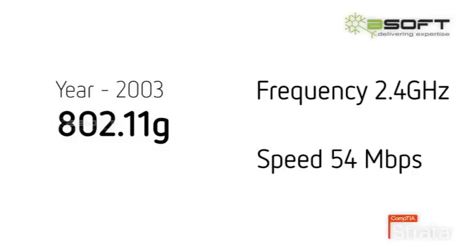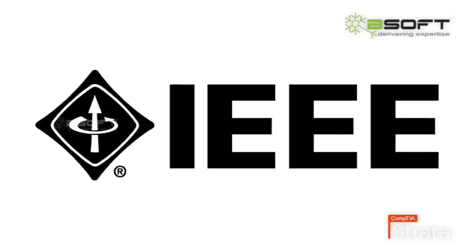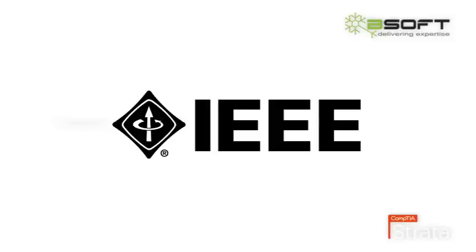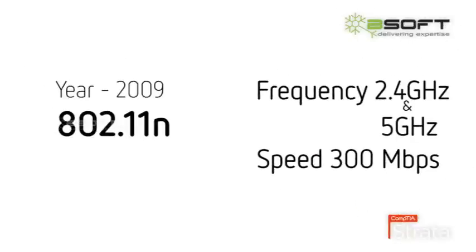A new standard, 802.11g, using the original 2.4 GHz frequency, was released in 2003, offering data transfer speeds of up to 54 Mbps. It was widely accepted and is still being used. IEEE continued research and improvement, and the 802.11n standard released in 2009 offered enhanced speeds of up to 300 Mbps. The 802.11n standard is used in most new-generation wireless networks and can function with both 2.4 GHz and 5 GHz frequencies.